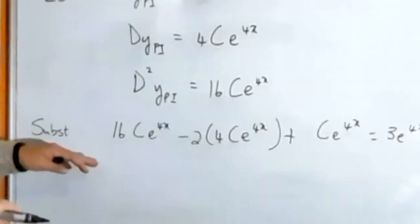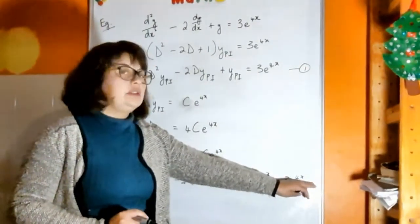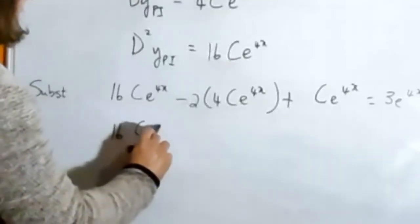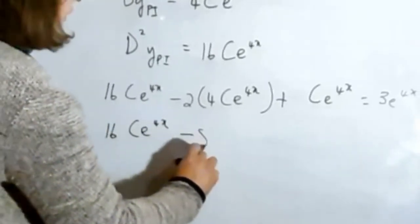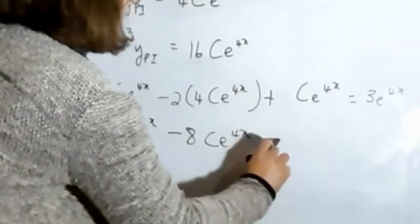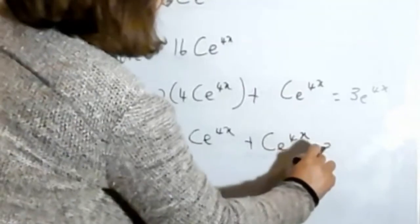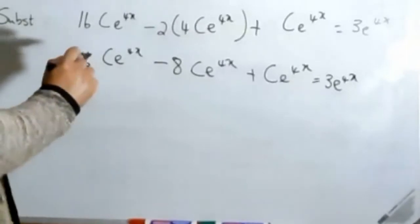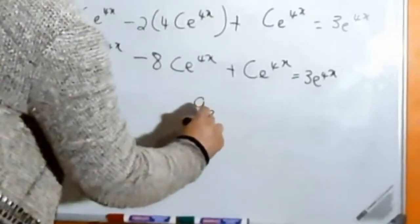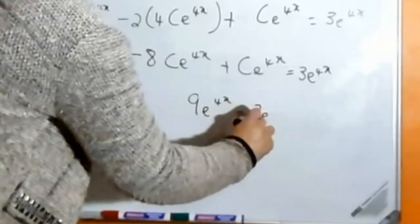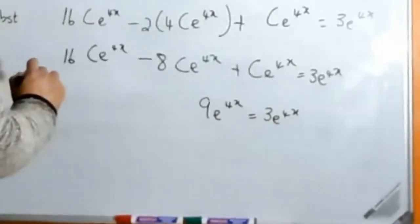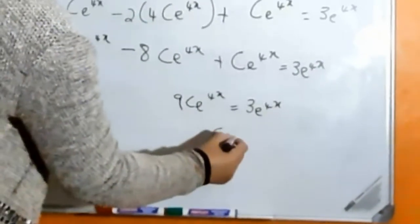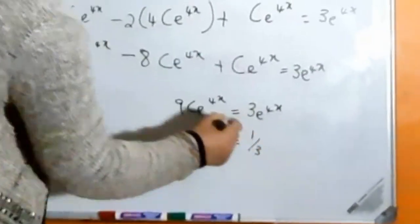And we know that when we simplify it has to equal 3e to the 4x, so what do we get? This is going to be 16, that's going to be 8, stays 1, right, and that adds up to 9. 9c, which means that c has to be a third.